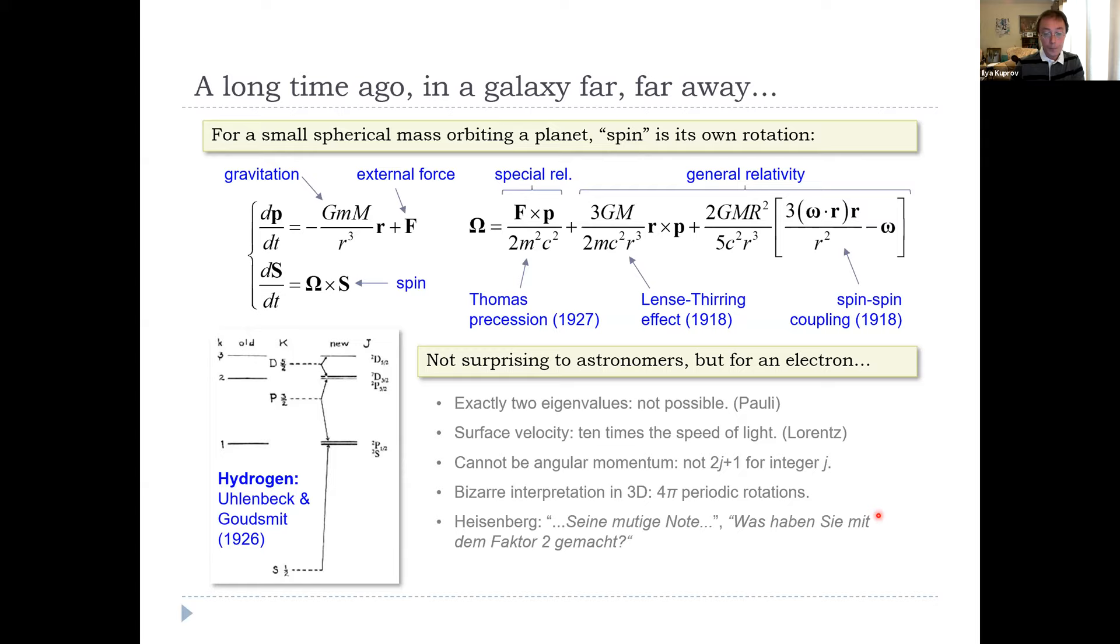Then Heisenberg read the paper. Of course, Uhlenbeck and Goudsmit simply had a coefficient to fit, so they didn't notice it. But he noticed that the classical description they use actually is missing a factor of two. So he wrote a letter to Goudsmit calling his paper 'Seine mutige Note,' your brave note, and asked him quite politely what has he done with a factor of two. Well, Goudsmit was 24 at the time, more or less a PhD student, and he admits quite frankly in his memoirs he was completely overwhelmed and didn't understand a bit of it. So the paper essentially was a product of much courage, much luck, and the hydrogen spectrum measured by Sommerfeld.